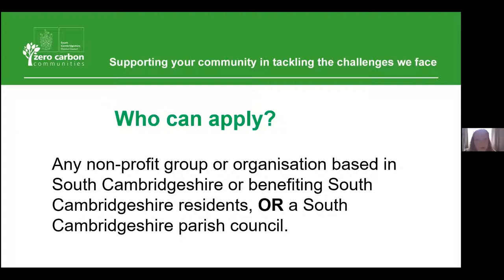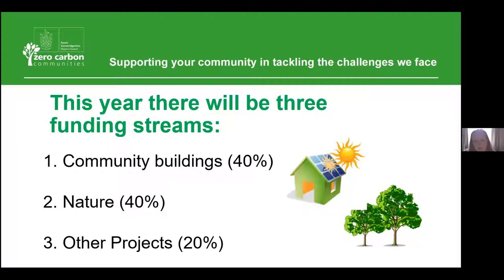This year the grant is broken into three streams: community buildings, nature, and an other category. Community buildings and nature were most popular with applicants last year, so we've included these again, plus an extra smaller category for other bold and ambitious projects which meet our objectives to a high standard.